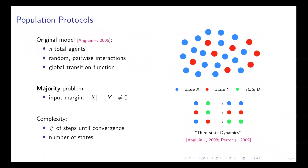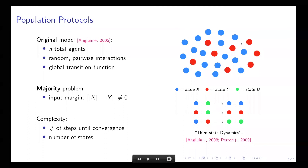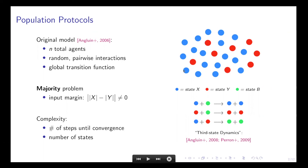Our work is about the majority problem in a variant of the original population protocol model. In the original model, we have a population of n mobile agents, where at every step a pair of agents is chosen uniformly at random to interact, and the local state of both agents are updated according to some global transition function. In the majority problem, we assume that initially every agent is in one of two states, either a blue state or a red state, and we also assume that the input margin — the absolute difference in the initial counts of the two states — is non-zero. The goal is to converge to a configuration where every agent ends up in the blue state, which is the initial majority state.